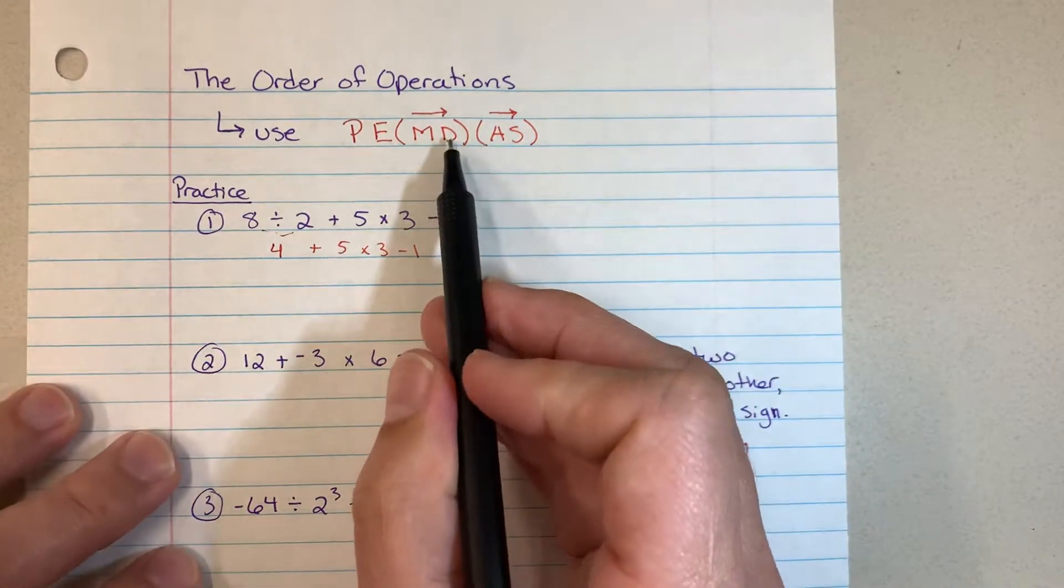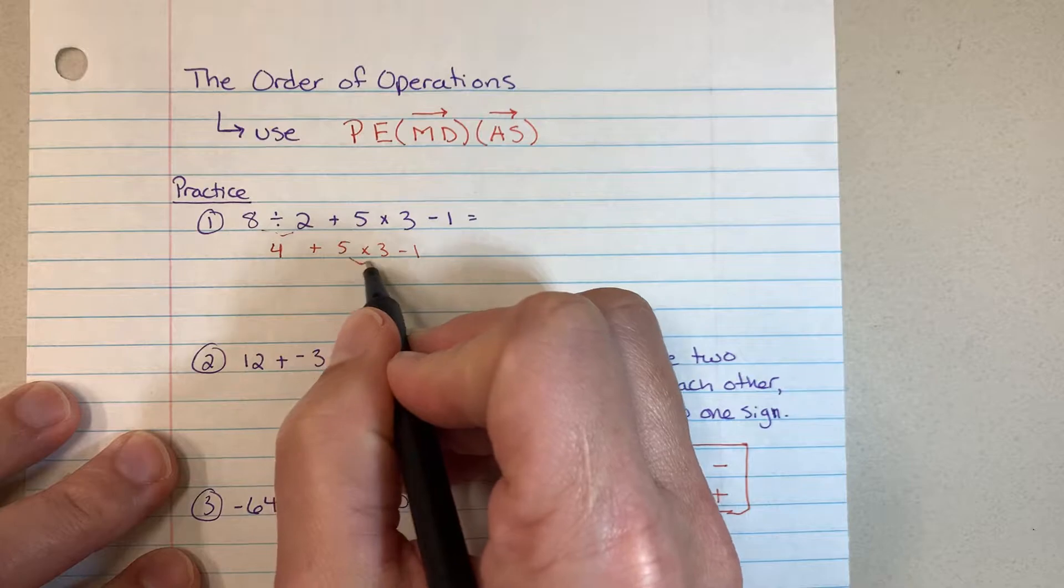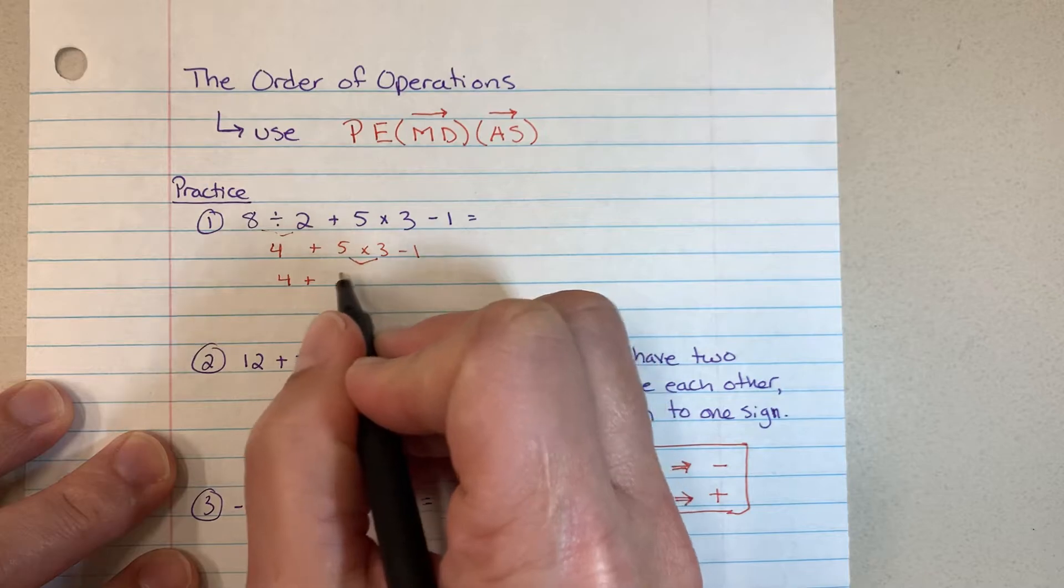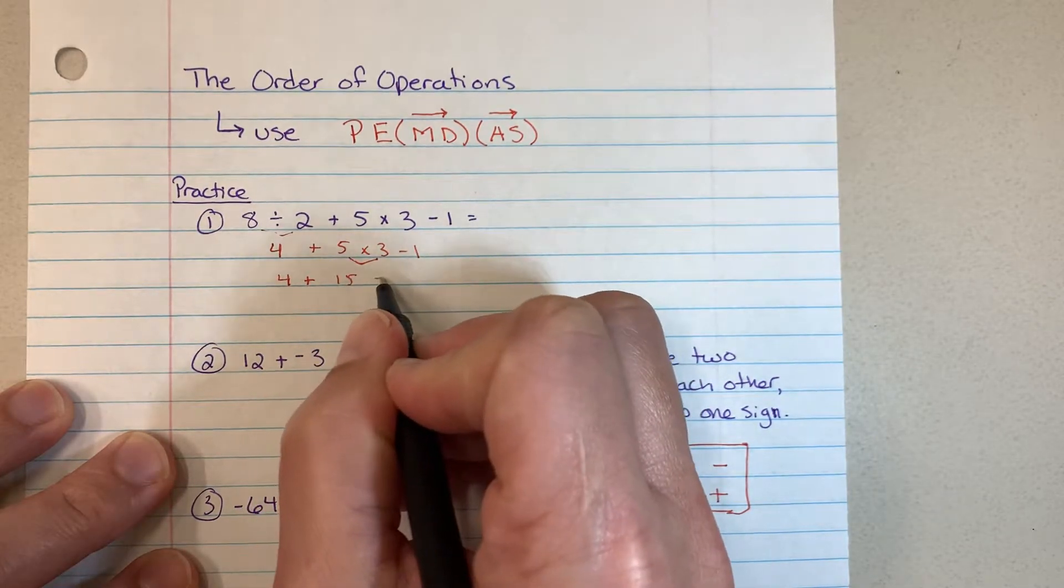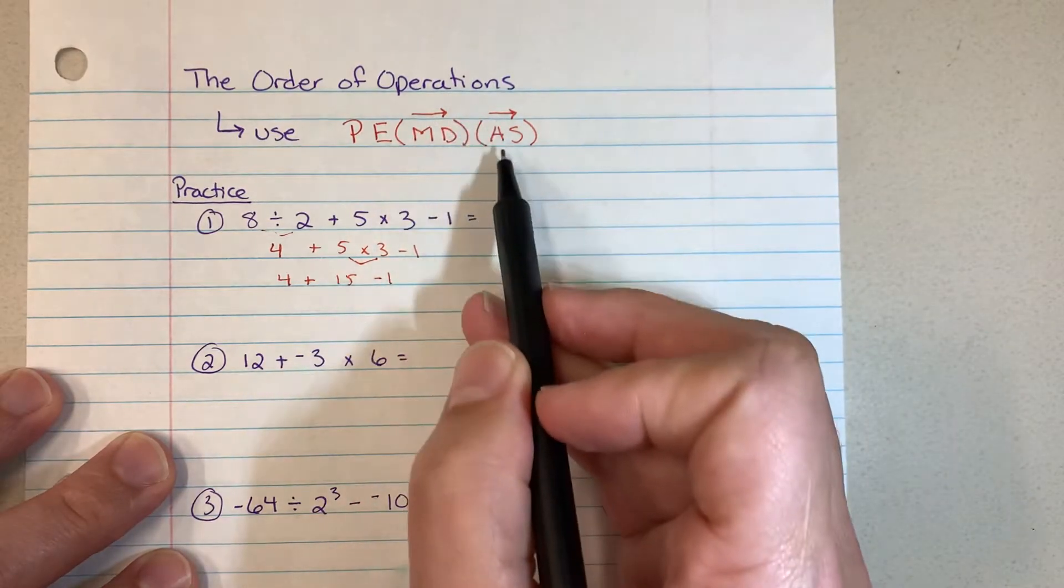Let's see if there's any more multiplication or division. Yes, right here. So we want to work these out next. 5 times 3, and so we get 4 plus, that'll be 15, and then minus 1. And we have no more multiplication and division, so we can move here.